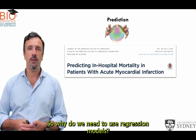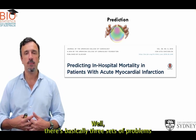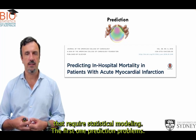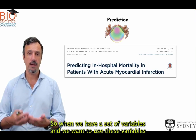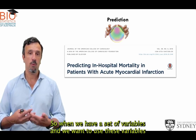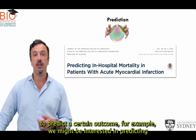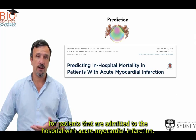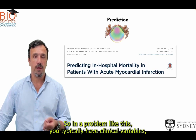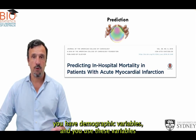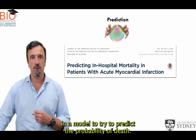So why do we need to use regression models? There are basically three sets of problems that require statistical modeling. The first one is prediction problems — when we have a set of variables and we want to use them to predict a certain outcome. For example, we might be interested in predicting in-hospital mortality for patients admitted with acute myocardial infarction, using clinical and demographic variables to predict the probability of death.